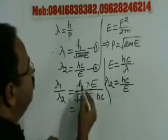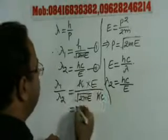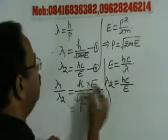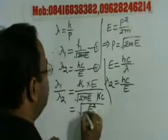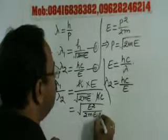This will be equal to H, H cancels. So this will be equal to E squared divided by 2ME into C squared.